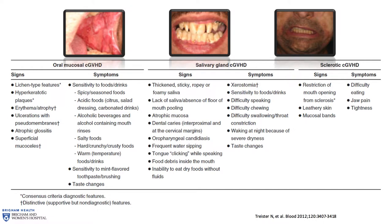With salivary gland disease, it's much more dryness — mouth feeling dry, sticky, difficulty eating, difficulty swallowing, difficulty speaking, problems with dental cavities. In some cases dry mouth symptoms can also cause sensitivity very similar to the rash-like changes. With the sclerotic disease — incredibly, incredibly rare, fortunately — it's typically difficulty with opening widely, and difficulty with being able to adequately brush the teeth or have dental care provided just because of the limitations in opening.